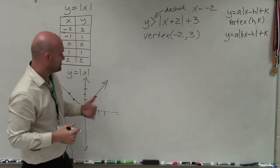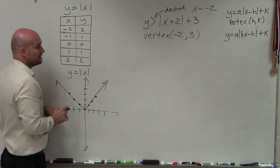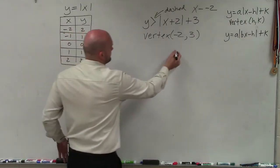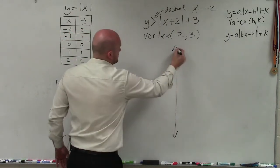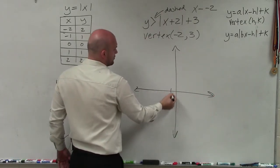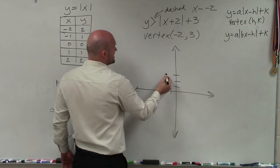Instead of my vertex being at (0, 0), now it's at (-2, 3). So my graph is being shifted 2 units to the left and 3 units up. So now I go over 2 units: 1, 2, and then up 3: 1, 2, 3. So now that is my new vertex.